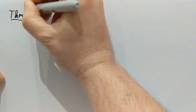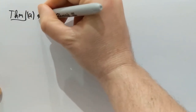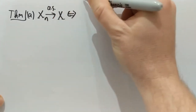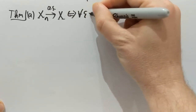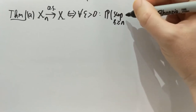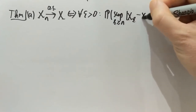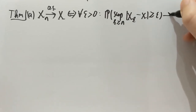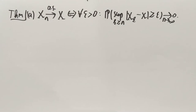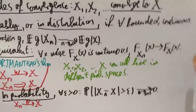Hi everyone. This video will hopefully make it clearer how convergence in probability and almost sure convergence differ. The theorem we're proving has two parts. Part A states that xn converges to x almost surely if and only if the following happens: for every epsilon positive, the probability that the supremum over k at least n of |xk minus x| is larger than or equal to epsilon goes to 0 as n goes to infinity.